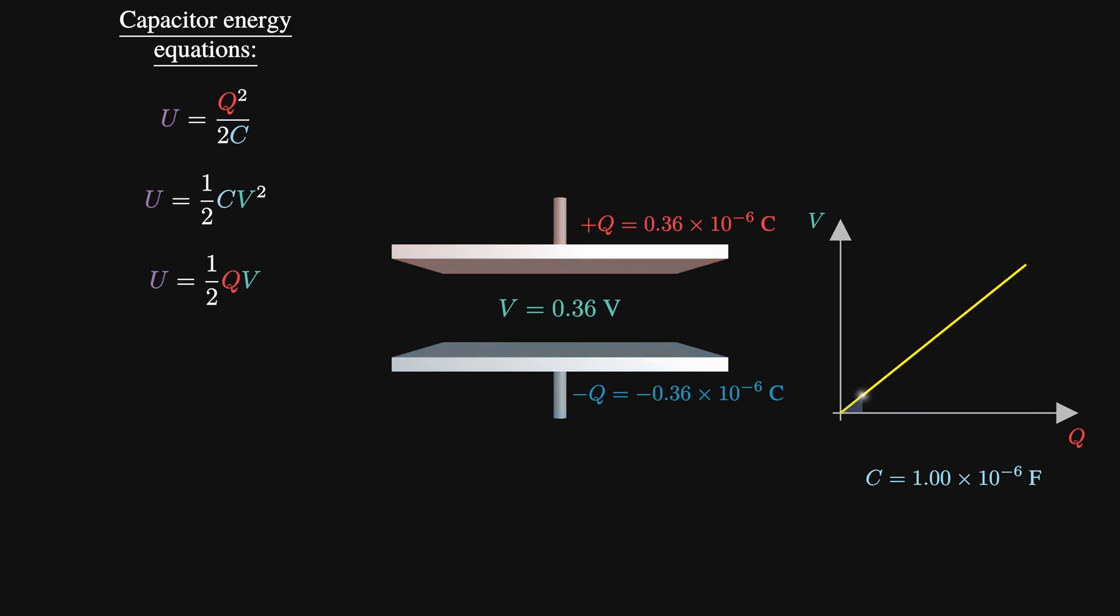But these equations actually miss something very fundamental to the physics. Sure, when charge is moving through a voltage, we know the energy is changing. But once the charge is in the plates, and it stops moving, where does the energy actually go?